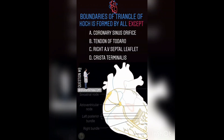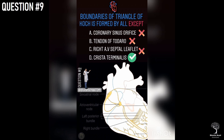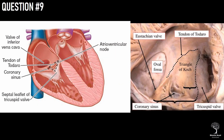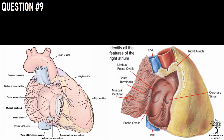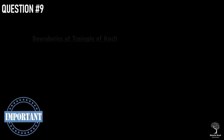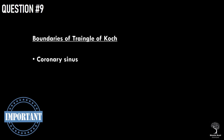Question 9. Boundaries of the triangle of Koch are formed by all structures except which among the following? The right answer is option D, crista terminalis. The triangle of Koch is defined by the following structures within the right atrium: the ostium of the coronary sinus posteriorly, the anterior septal leaflet commissure, and the tendon of Todaro. The triangle of Koch is used as an anatomical landmark for the location of the atrioventricular node during electrophysiology procedures such as pacing or ablation. The crista terminalis is a vertical crest representing the junction between the sinus venosus and the heart in the developing embryo, and it provides the origin for the pectinate muscles. Take home message: the triangle of Koch is bounded by the coronary sinus, septal leaflet, and the tendon of Todaro.